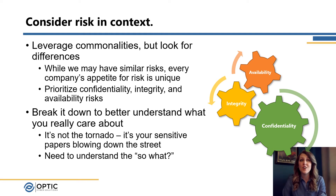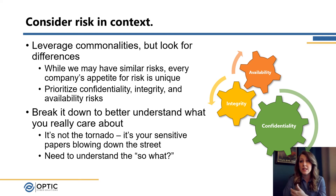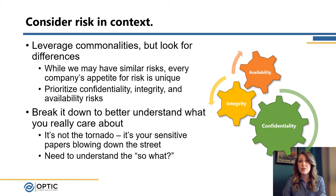We really have to consider risk in context. We want to look for commonalities across our organizations, knowing that everybody is going to have some level of cybersecurity risk, but they're all going to be slightly different. Everybody's going to have a different appetite for risk, and everyone's going to care differently about availability, integrity, and confidentiality — how they prioritize those things and what's most important to their business. That's why having cybersecurity as one line item on a risk register can be very misleading. If we don't fully understand why we have that risk or what threats and vulnerabilities it involves, it's much harder to figure out what to do about it. The risk is not the tornado — we're worried about that sensitive information blowing down the street.